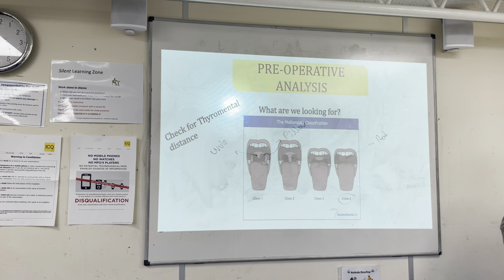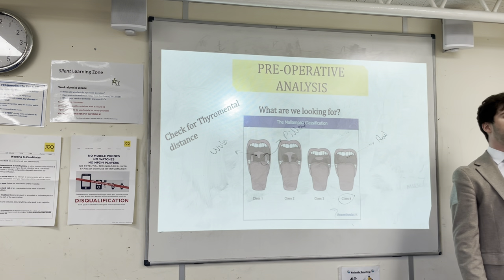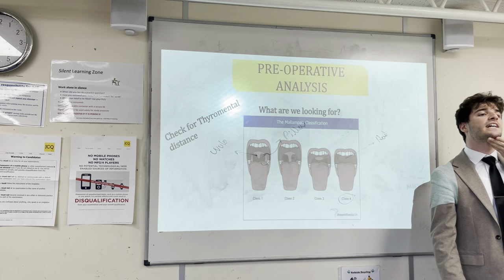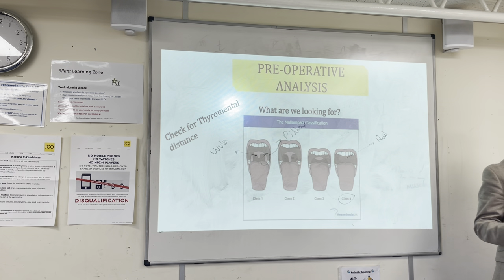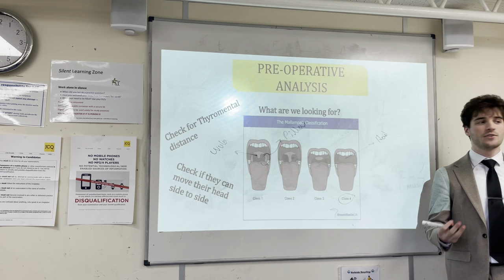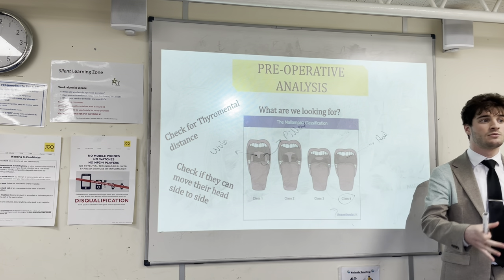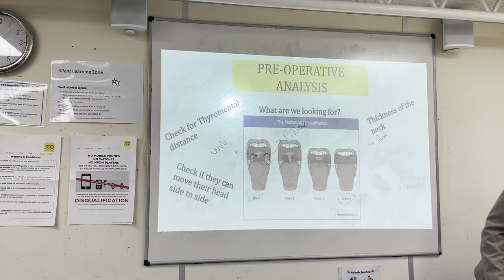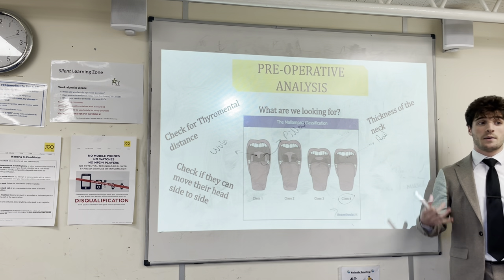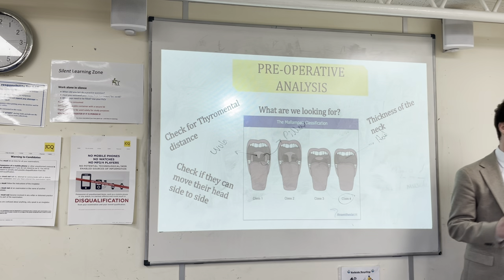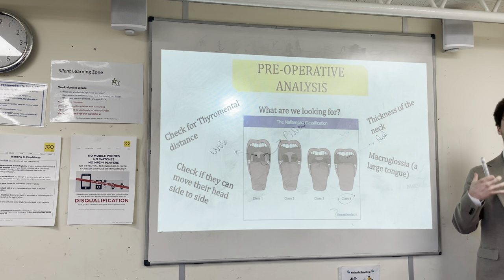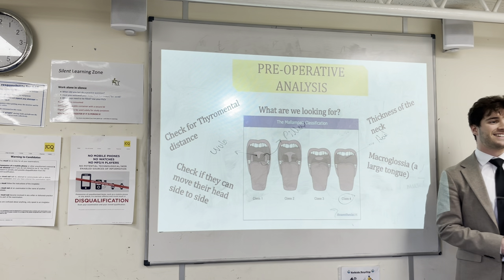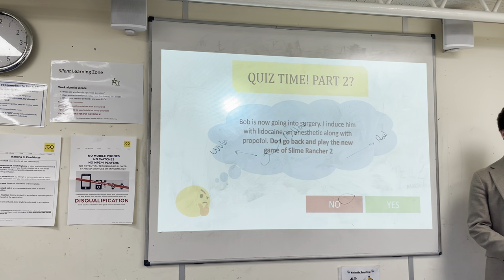Another thing is to check the thyromental distance. I've got my chin here and I've got my little bump over here, and I can check how many finger breadths it is away — the decrease in finger breadths, the more complicated it becomes for airway management. Next: can I move my head side to side? If they can't, it's going to be a problem when I have to move the patient. It could also mean they have a cervical spine injury. Next is the thickness of the neck — big thickness is good, small thickness is bad. Macroglossia is a large tongue; we'll come back to that later.